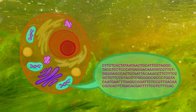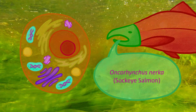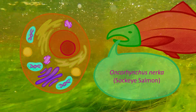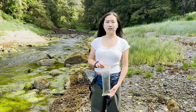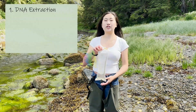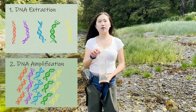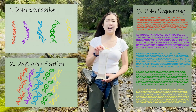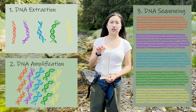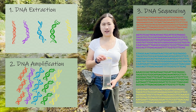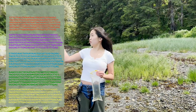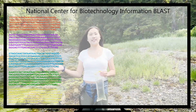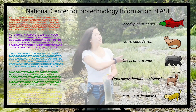Metabarcoding lets us translate nature's language into human language. First, eDNA is sampled from the environment. In the lab, we extract the DNA, amplify the barcode regions using PCR, and then use high-throughput sequencing to determine the various DNA sequences in our sample. Each sequence, called a read, is entered into an online database that matches sequence to species.